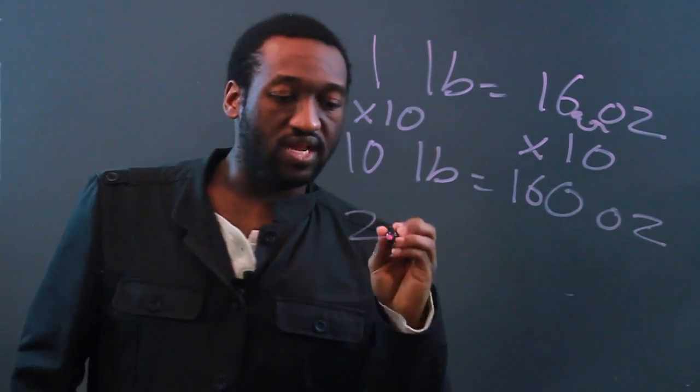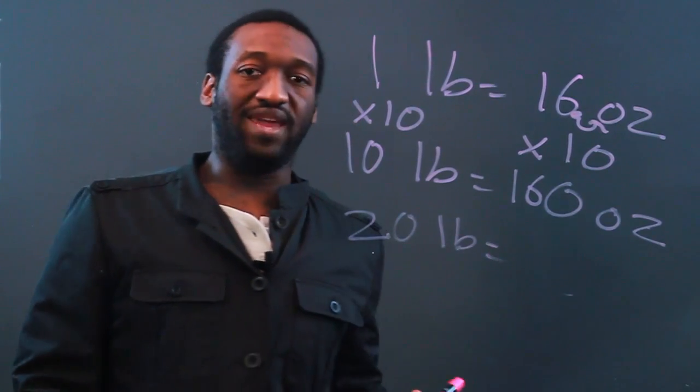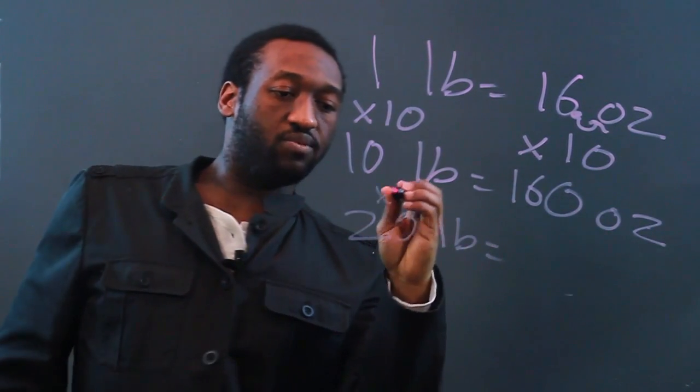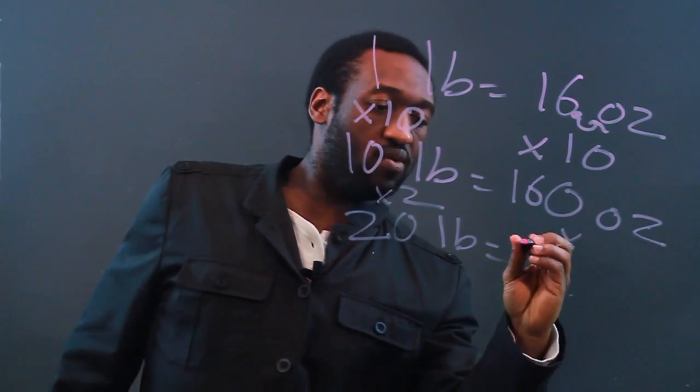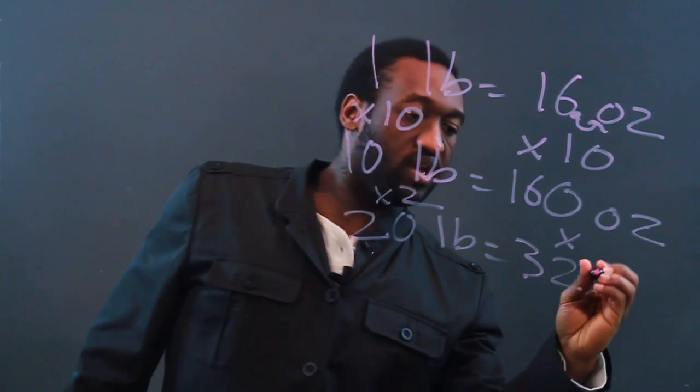If I wanted to do 20 pounds, to make things easy, let's go from this. 10 times 2 would give me 20, so 160 ounces times 2 would give me 320 ounces.